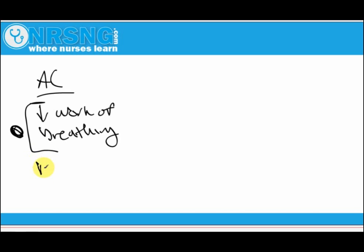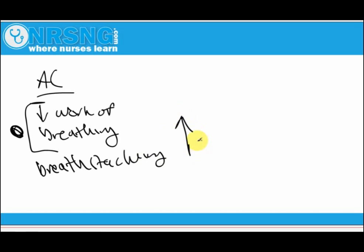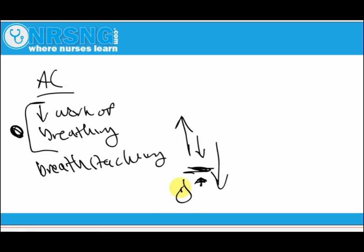Breath stacking happens when the patient is trying to exhale and the ventilator delivers another breath at the same time, trapping a little bit of air inside the alveoli. The patient keeps trying to get rid of that air but keeps receiving more. This is called breath stacking, and it's also called auto-PEEP.